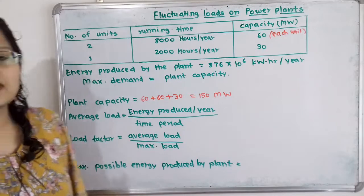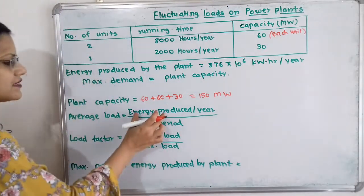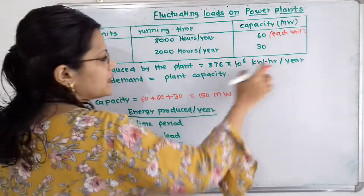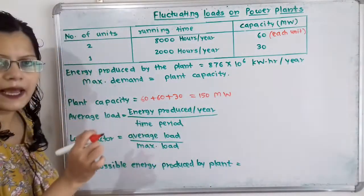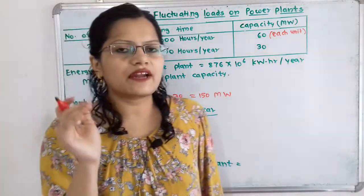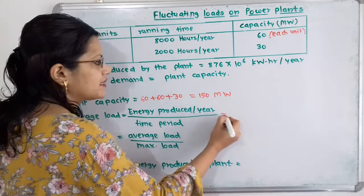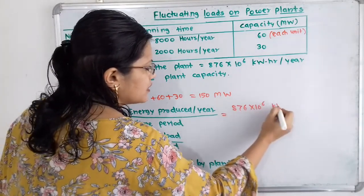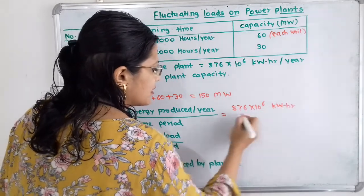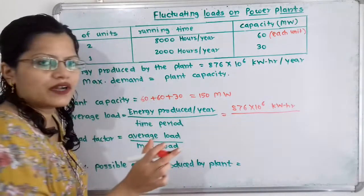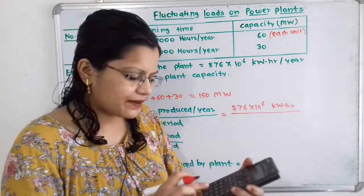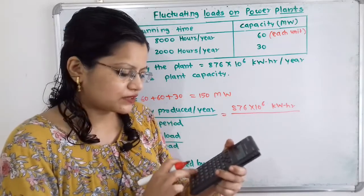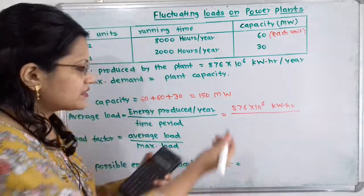Then we will move to the calculation of average load. Average load is energy produced per year divided by time period. Energy produced by the plant per year is given as 876 × 10^6 kWh, divided by the time period for one year in hours, which is 365 days multiplied by 24 hours, that is 8760 hours.